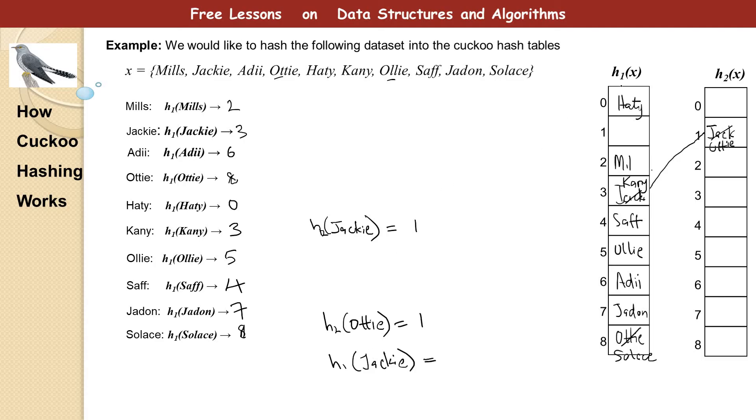And if we come here we see we already have Cani here. So we kick out Cani, put back Jackie. And then that will make it necessary to calculate h2 of Cani. That gives us six. So we place Cani here. So permit me to take out this and put back.